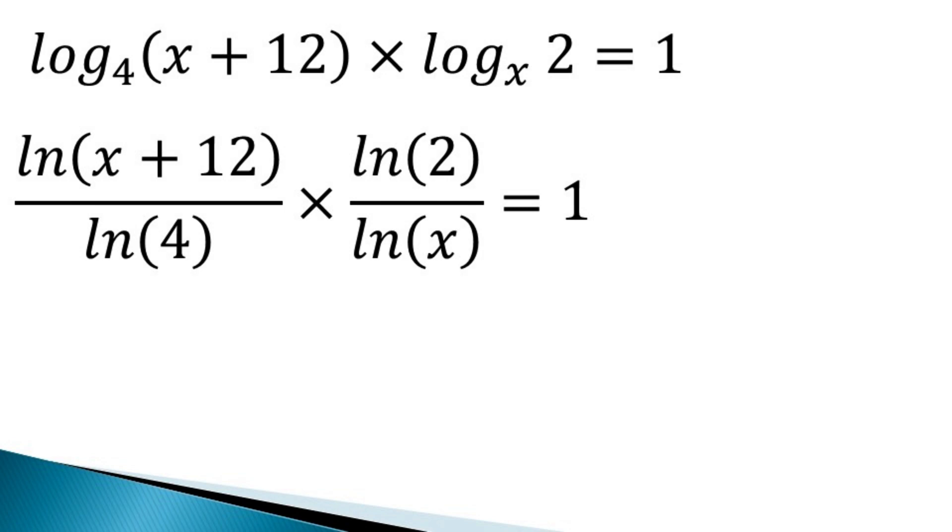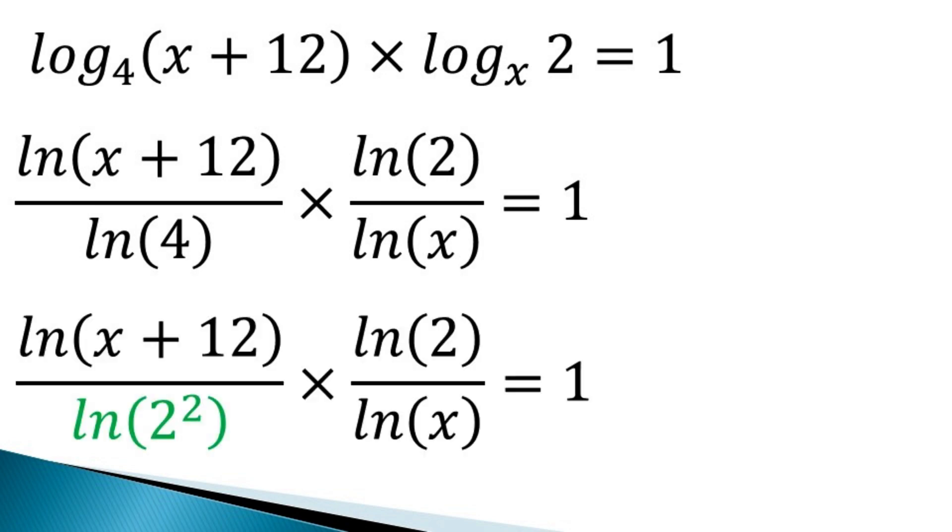Now in the first term, in the denominator, 4 can be expressed as 2 square. So the equivalent equation becomes ln(x + 12) divided by ln 2 square into rest of the terms.